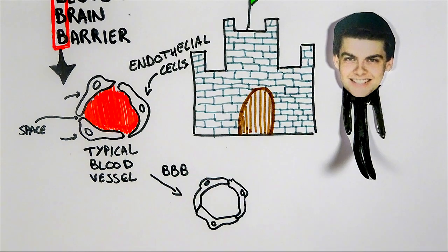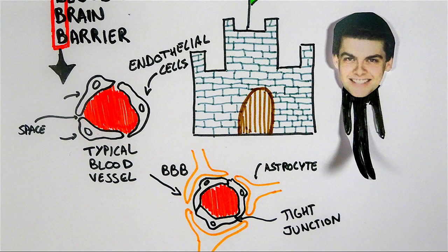However, in case of the blood-brain barrier, these endothelial cells that make up your blood vessels are tightly connected together through tight junctions and surrounded by astrocytes, making it impossible for substances to go through to the brains.